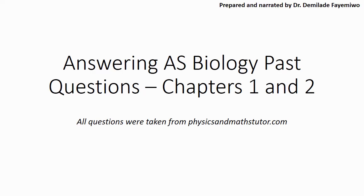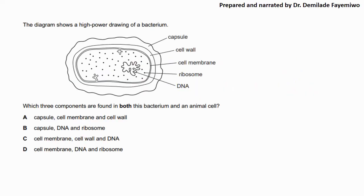All the questions that I am answering were taken from physicsandmathstutor.com so make sure you go there and check out some of the free past papers that they have for CAIE biology. They also have fact sheets, they have summary notes that you can use for your revision for your examination. These videos will be focusing on chapters 1 and 2 so it's just a few of them, I think there are about 6 questions in this slide.